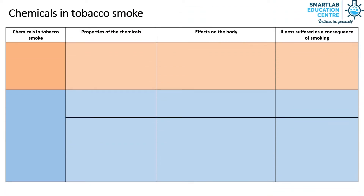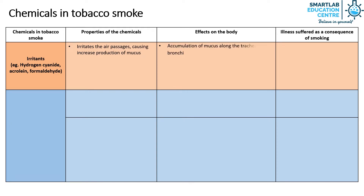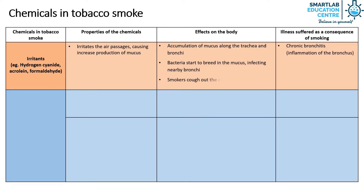The third chemical found in tobacco smoke is irritants. Some examples of irritants are hydrogen cyanide, acrolein, and formaldehyde. Irritants irritate the air passages, causing increased production of mucus and its accumulation along the trachea and bronchi. When bacteria start to breed in the mucus, it can infect the nearby bronchi, leading to chronic bronchitis. When smokers cough out the mucus, the persistent coughing can lead to emphysema.